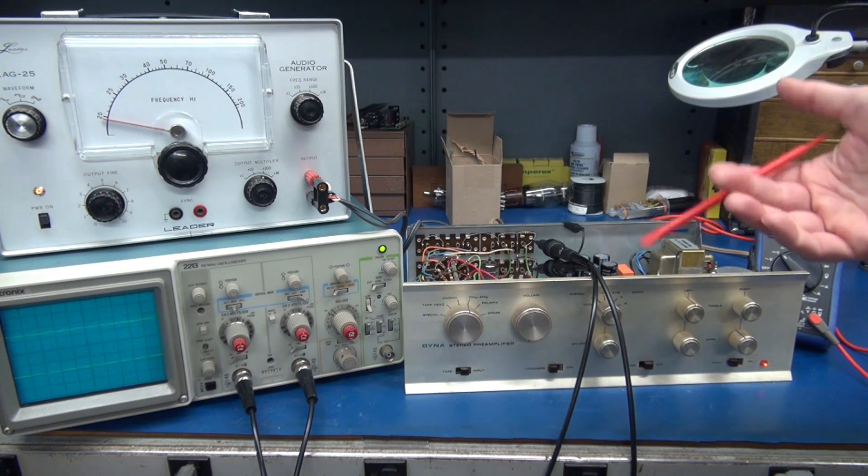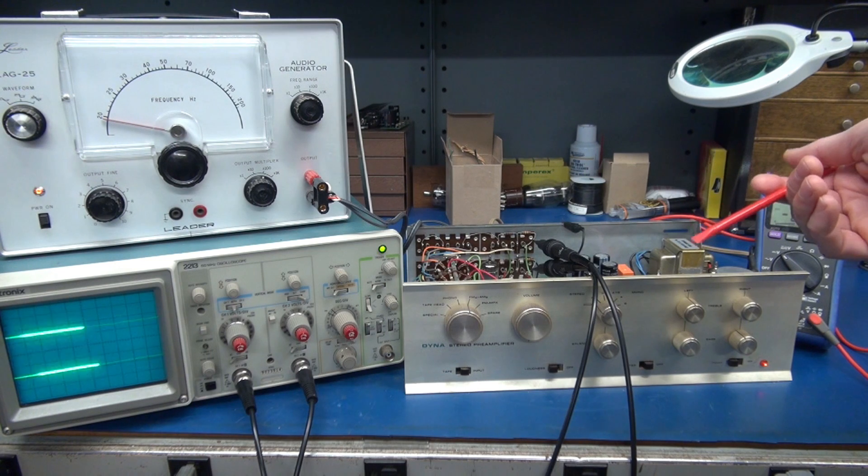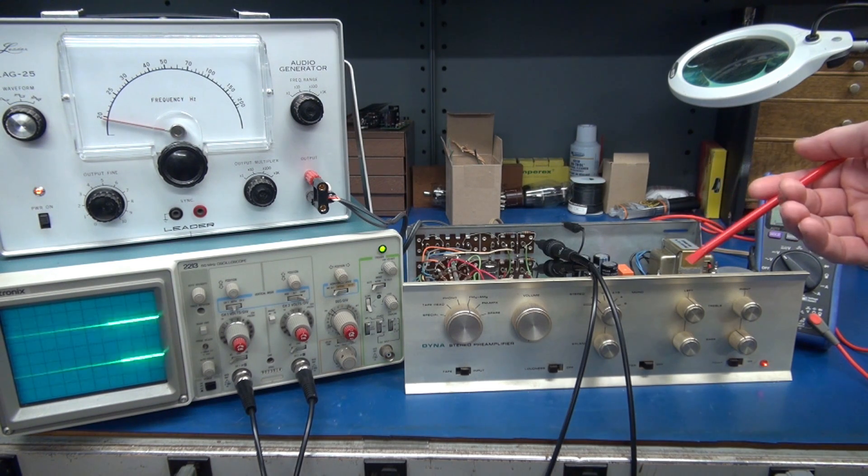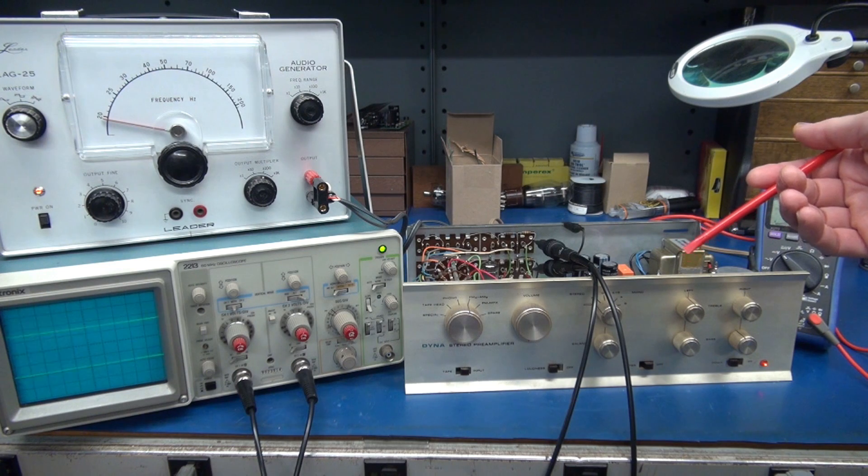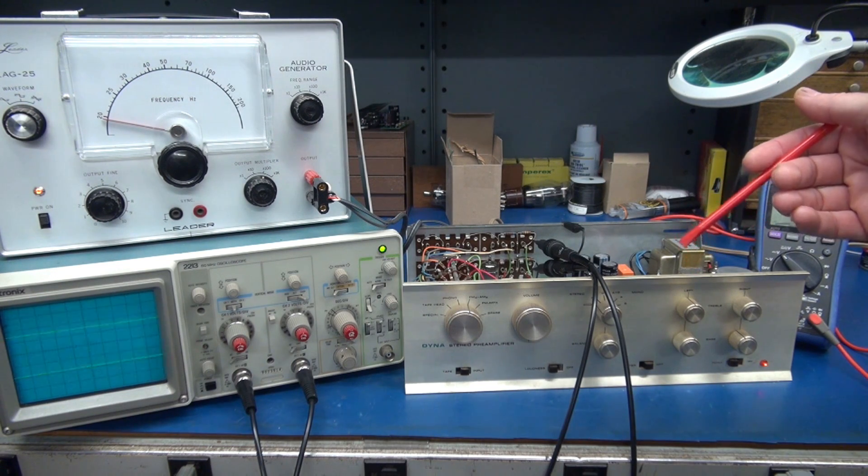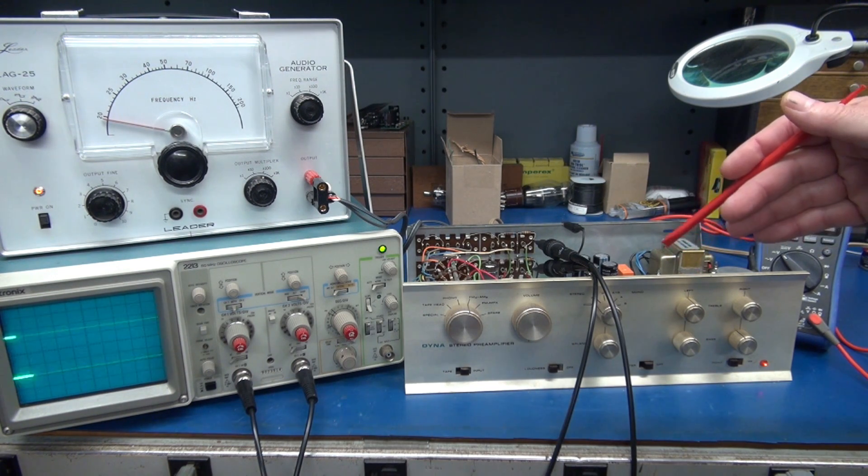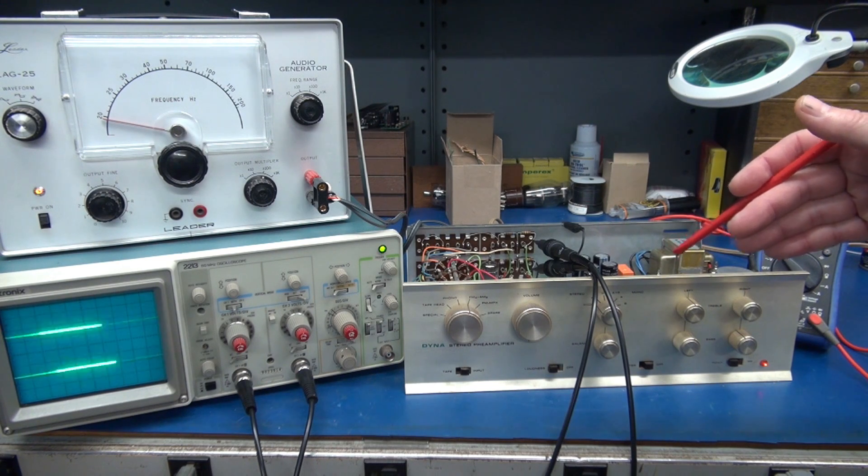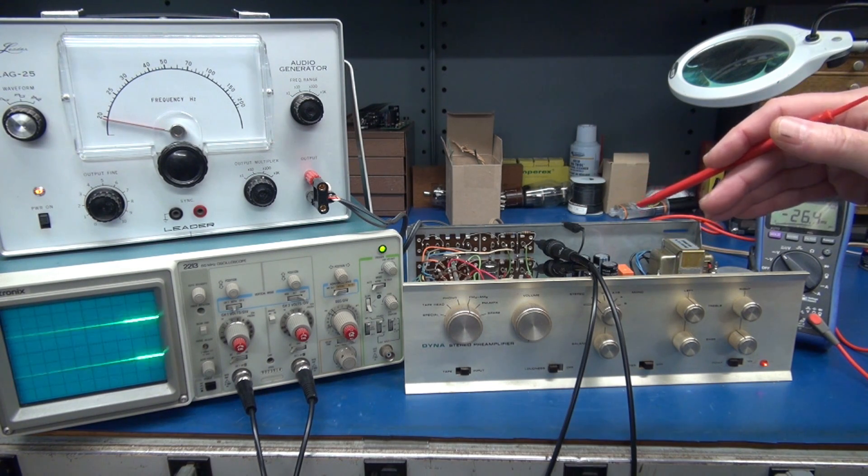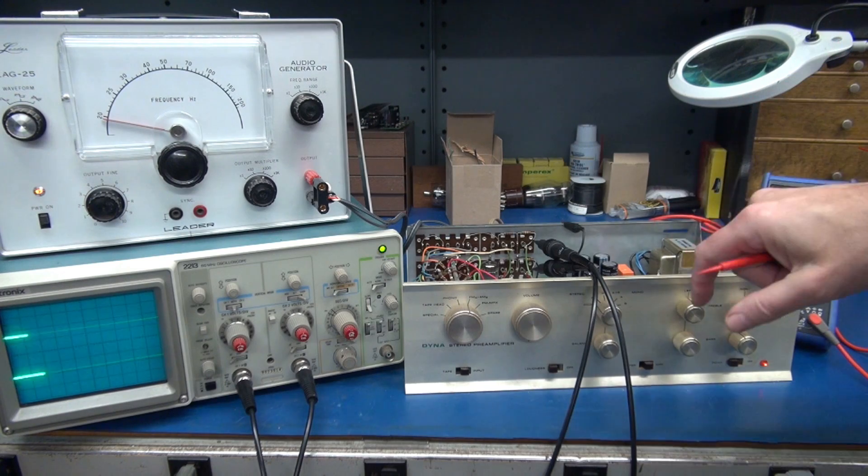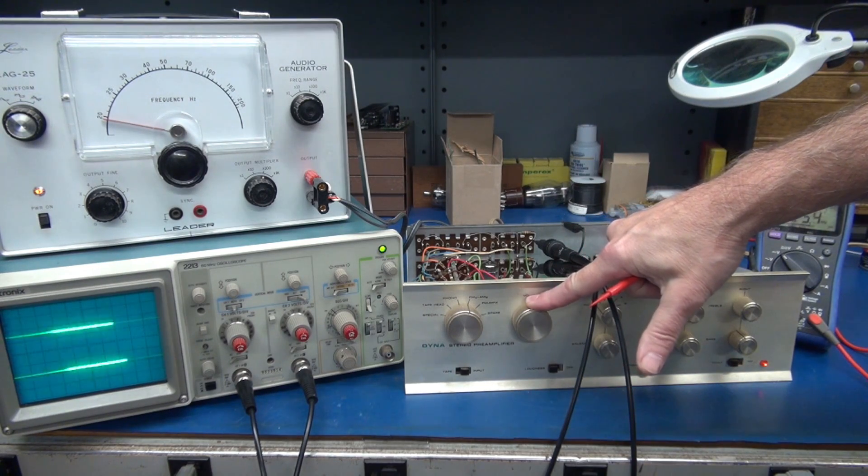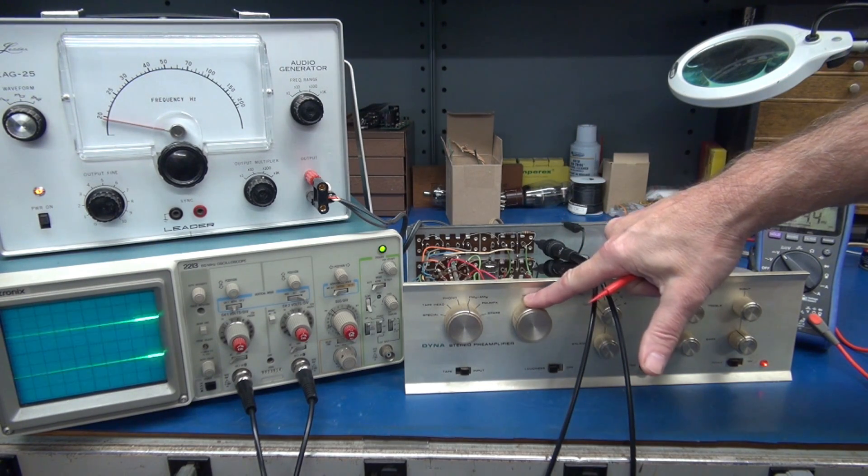My oscilloscope is set up for 2 milliseconds per division time and 0.5 volts DC for amplitude. Coupling is at AC, and we are in the dual trace mode. Now what I'm going to do is increase my volume control, and we're going to watch the scope for hum.